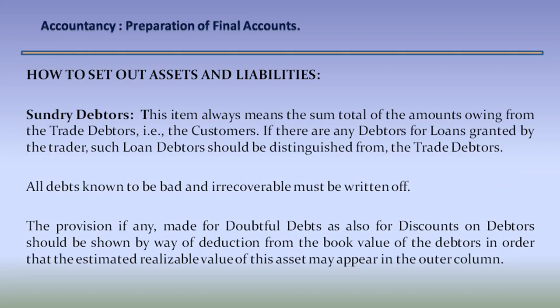Sundry debtors: this item always means the sum total of the amounts owing from the trade debtors, that is the customers. If there are any debtors for loans granted by the trader, such loan debtors should be distinguished from the trade debtors. All debts known to be bad and irrecoverable must be written off. The provision, if any, made for doubtful debts as also for discounts on debtors should be shown by way of deduction from the book value of the debtors, so that the estimated realizable value of this asset may appear in the outer column.